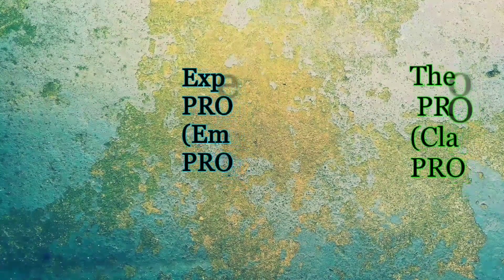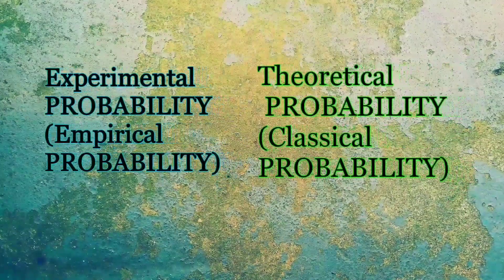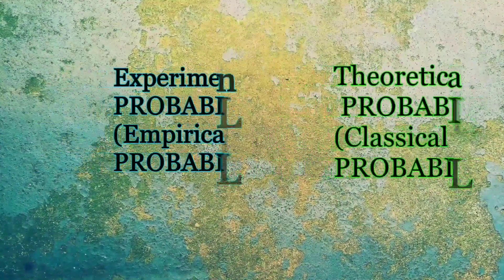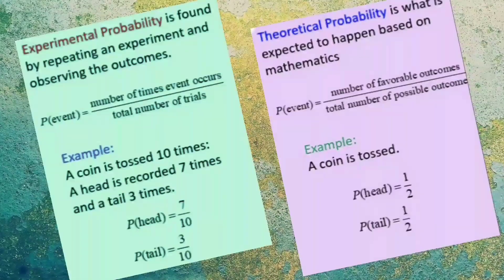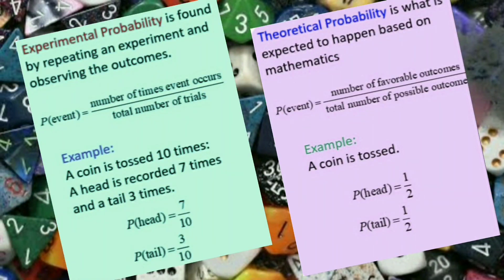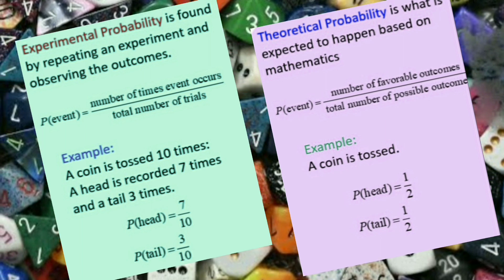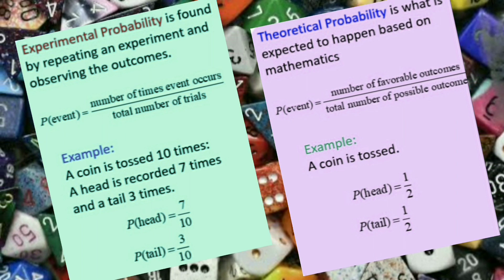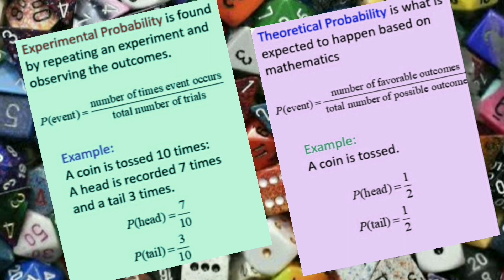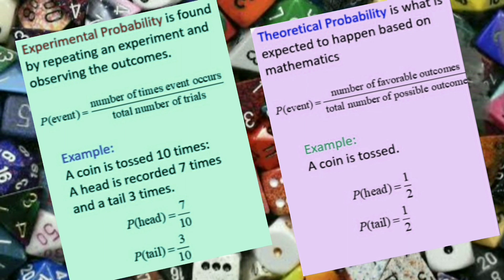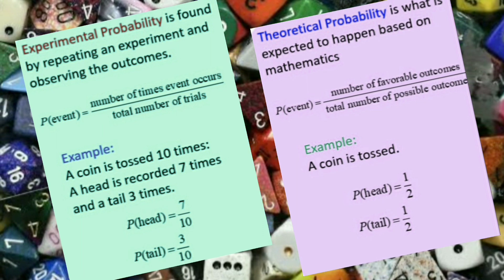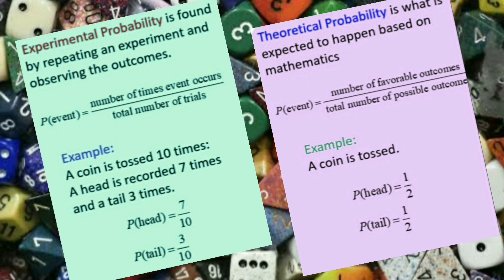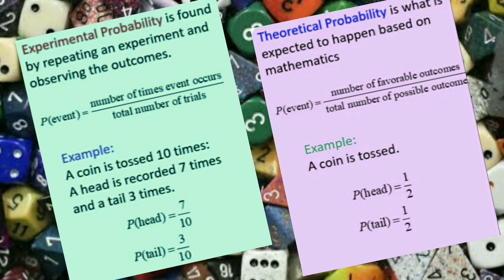In general, we study both experimental and theoretical probability. Experimental probability, also known as empirical probability, is based on actual experiments. The formula is: P(A) = number of times event occurs divided by the total number of trials. Whereas in the case of theoretical probability, also called classical probability, actual results are not required. The formula is: P(A) = number of favorable outcomes upon total number of possible outcomes.